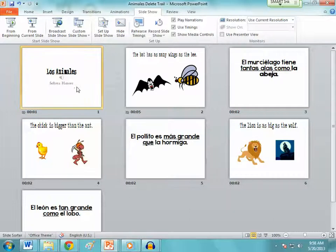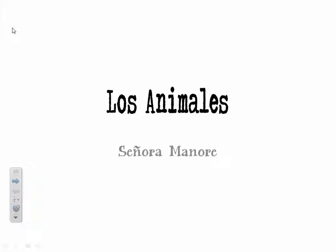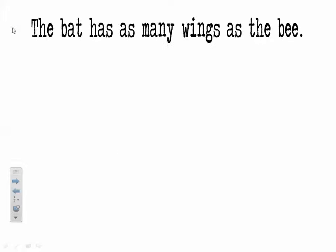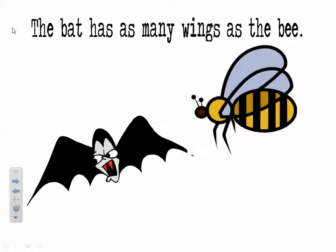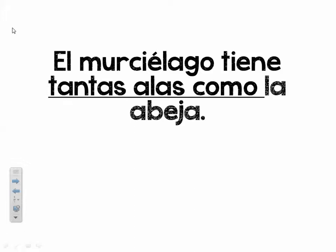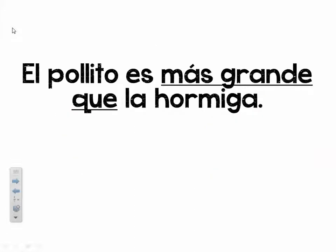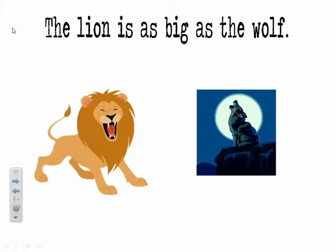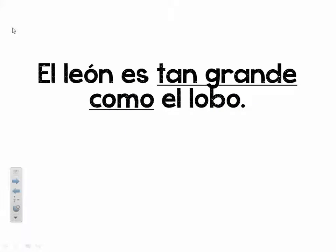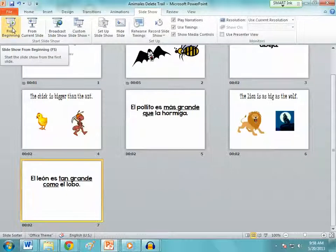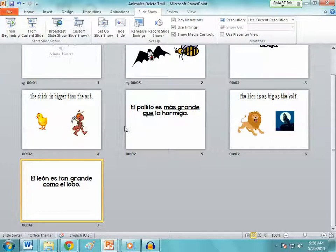Then I click Yes and save my PowerPoint. Now from the beginning — without clicking anything — 'Los animales por señor' — 'el murciélago tiene tantas alas como la abeja' — 'el pollito es más grande que la hormiga' — 'el león es tan grande como el lobo.' You get the idea — I didn't click through anything on that second presentation and my audio lined up with all of my slides. Best of luck with your presentations!